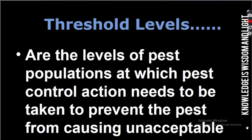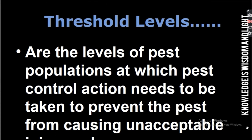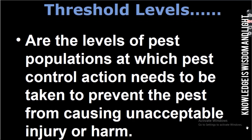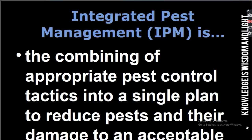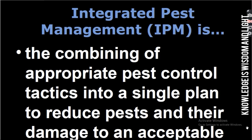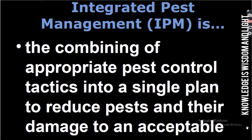Threshold levels are the levels of pest population at which pest control action needs to be taken to prevent the pest from causing unacceptable injury or harm.